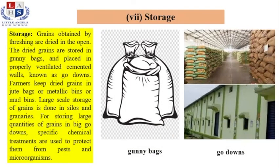This is the last process of crop production and management — storage. The storage process is of utmost importance because the success of all other processes depends upon proper storage management of crops.